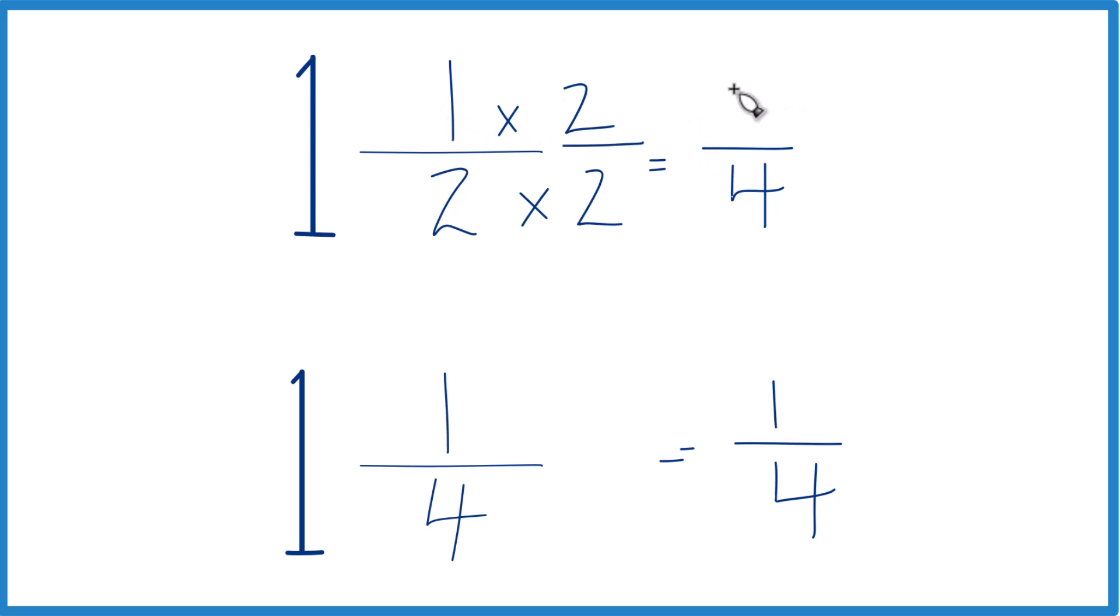1 times 2 is 2. And 2 fourths, that's the same as 1 half. They're the same thing. But now, same denominator. Let's compare the numerators.